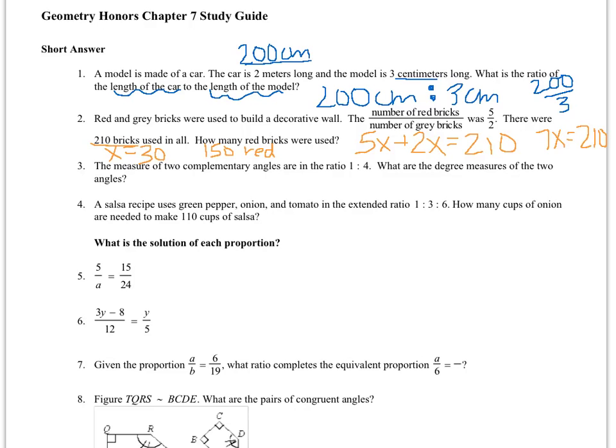I'm going to do something similar for number 3. I'm going to add up x plus 4x and set it equal to 90 since I know complementary angles add to 90 degrees. So I get 5x equals 90, which tells me that x is 18. But that's not what I'm being asked for. I want to know the degree measures of the two angles. One of my angles was just x, so I know that angle measures 18 degrees. The other one was 4x, so I need to multiply 18 by 4, which gets me 72 degrees.